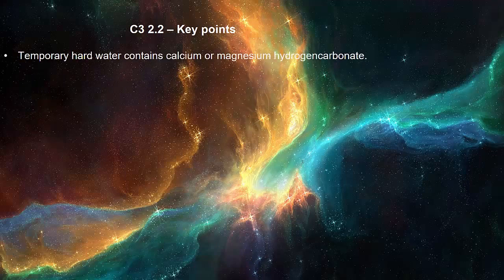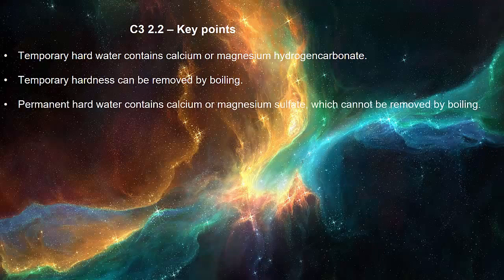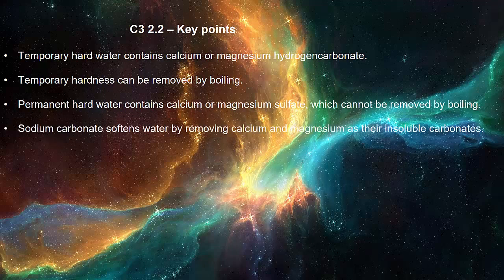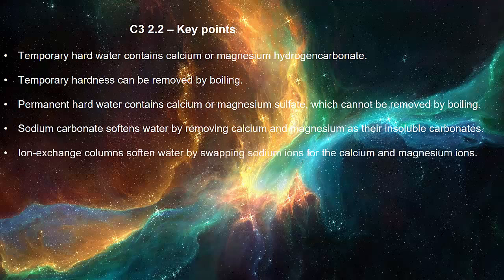Temporary hard water contains calcium or magnesium hydrogen carbonate. Temporary hardness can be removed by boiling. Permanent hard water contains calcium or magnesium sulfate, which cannot be removed by boiling. Sodium carbonate softens water by removing calcium and magnesium as the insoluble carbonates. Ion exchange columns soften water by swapping sodium ions for the calcium and magnesium ions.